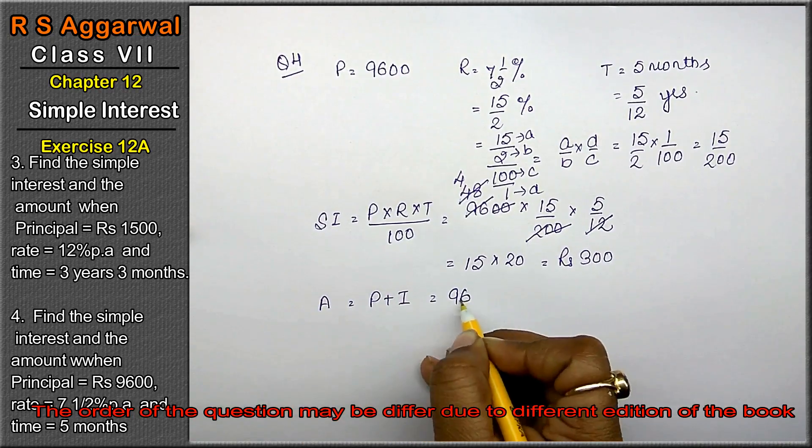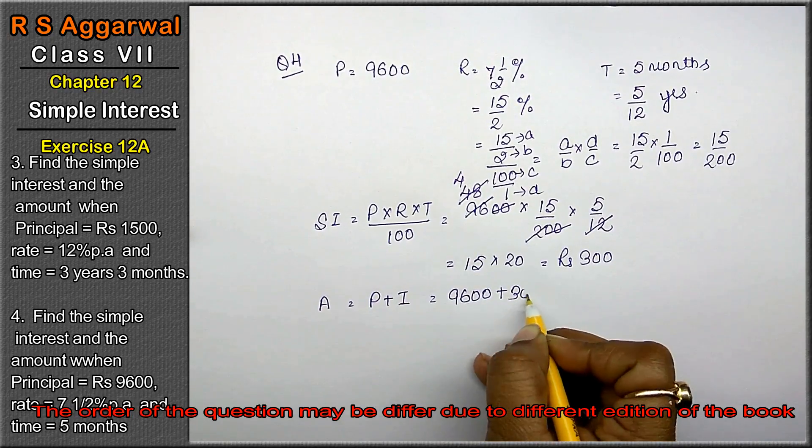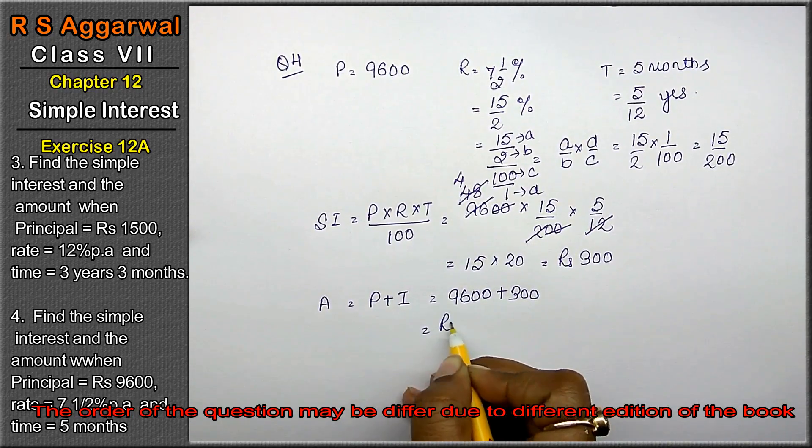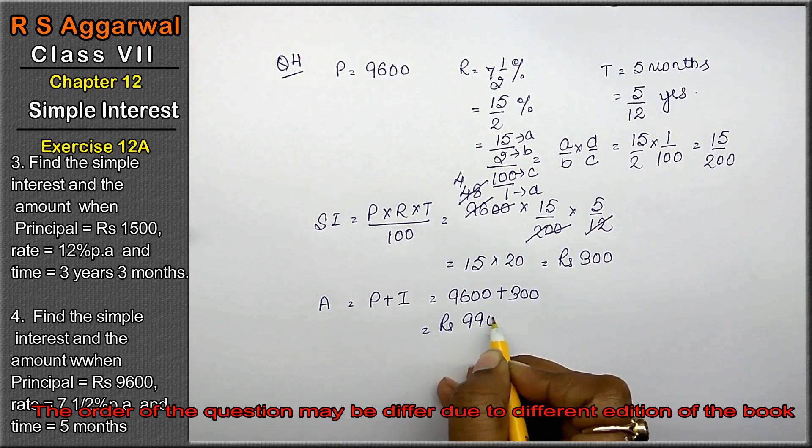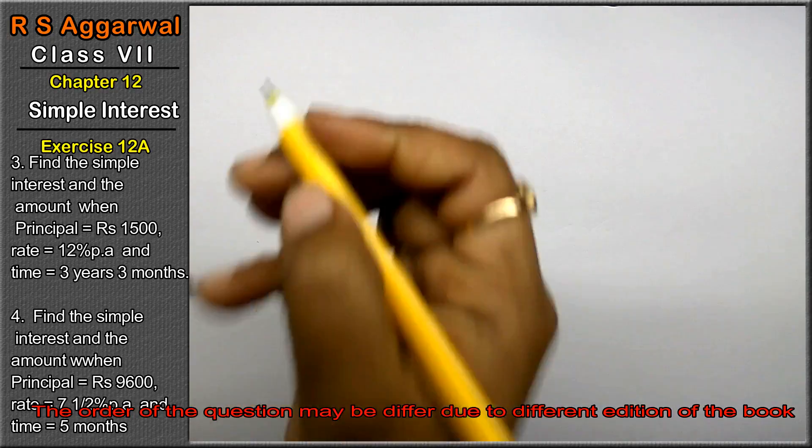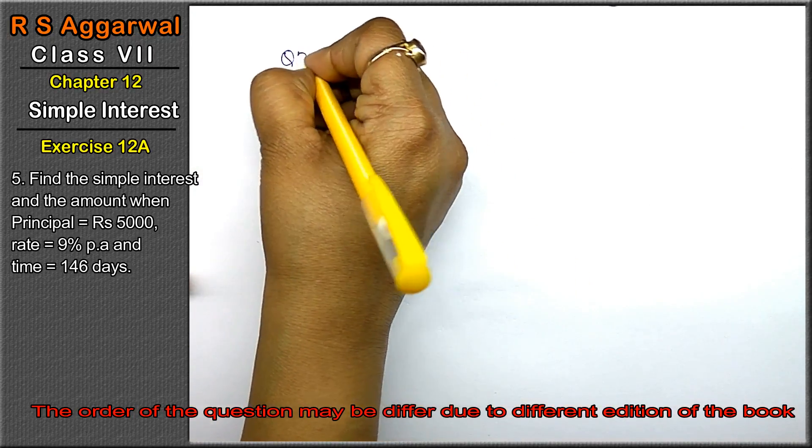Rupees 300 is the simple interest. Amount is P plus I: 9600 plus 300 equals rupees 9900 as the answer.